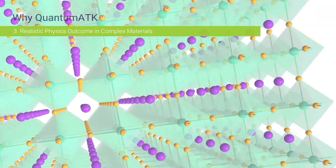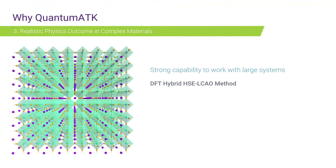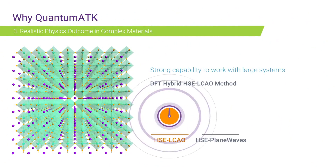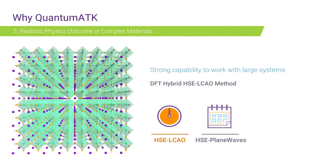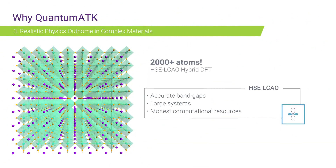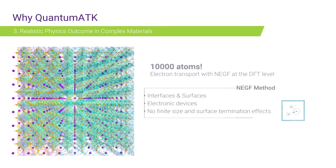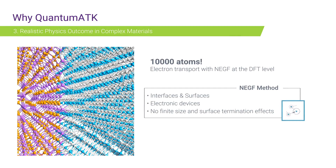The hybrid functional method HSE for LCAO is up to 100 times faster than plane wave HSE, and can be used to simulate large systems with 2000 plus atoms. The NEGF method is the most accurate tool to study interfaces, surfaces and electronic devices of 10,000 atoms.